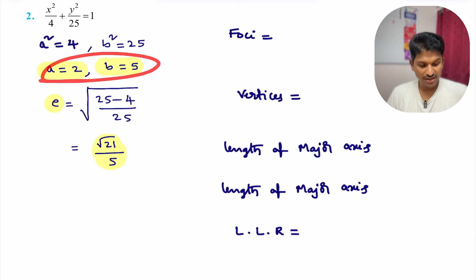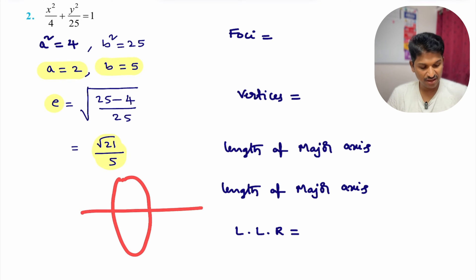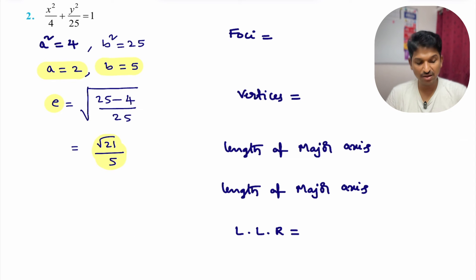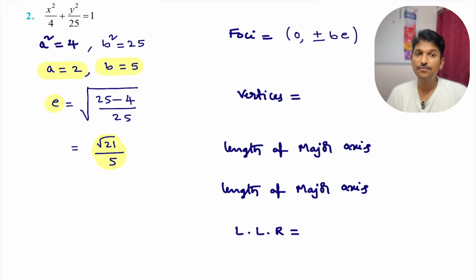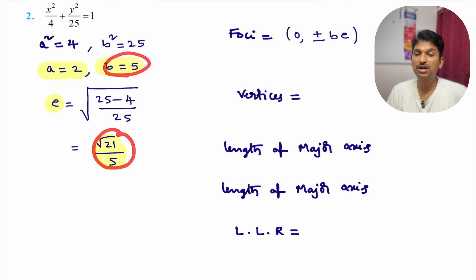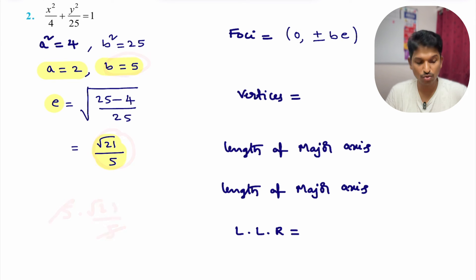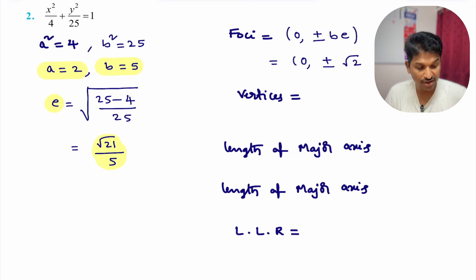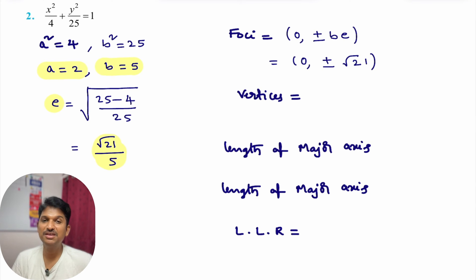As a < b, this is 2nd type of ellipse — foci are on the y-axis. Foci formula: (0, ±be). be = 5 × (√21/5) = √21. So foci are (0, ±√21).